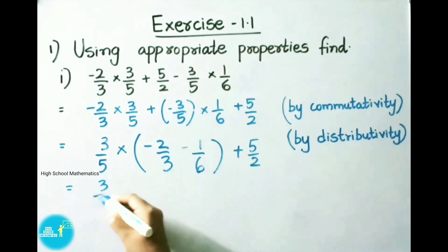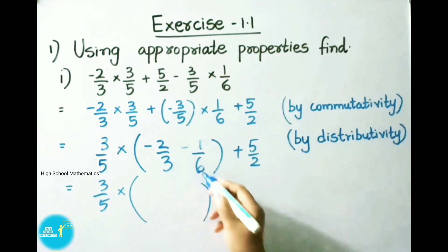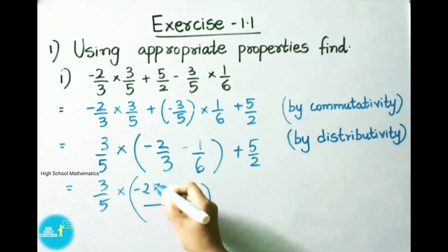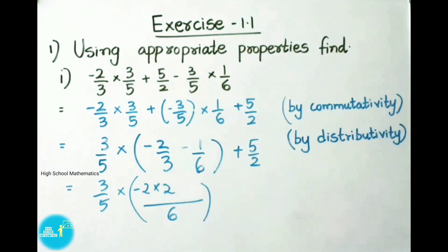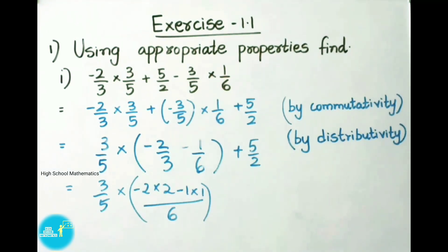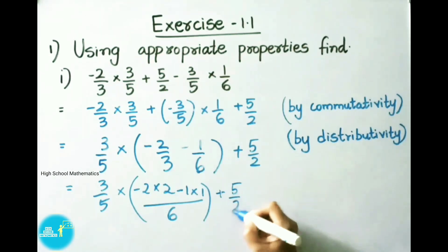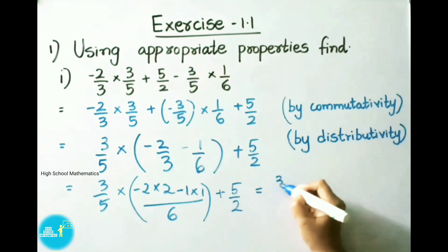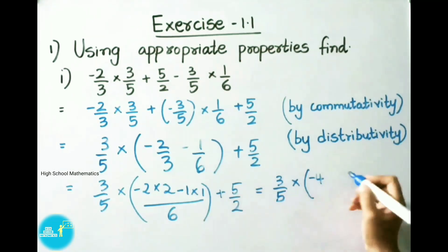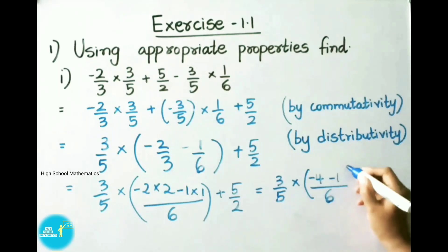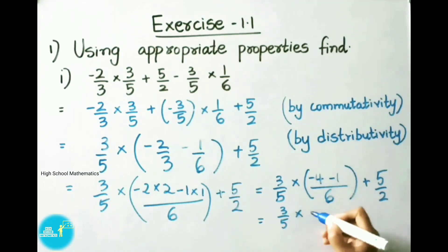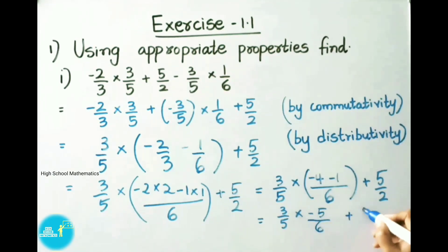That equals to 3 by 5 into, now we shall do LCM for the denominators 3 and 6, that is 6 only. So write on denominator 6. Write on numerator minus 2 into 3 table: 6 is 2 times, write on multiply by 2. Then write on minus 1 into 6 table: 6 is 1 time, into 1, plus 5 by 2. That equals to 3 by 5 into minus 2 into 2, that is minus 4. Minus 1 into 1, that is minus 1, by denominator 6. Plus 5 by 2.